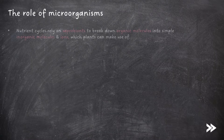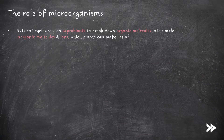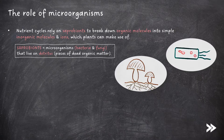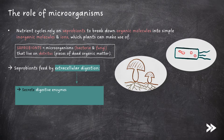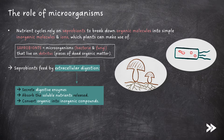Nutrient cycles rely on saprobionts to break down organic molecules into simple inorganic molecules and ions, which plants can make use of. Saprobionts are microorganisms, such as bacteria and fungi, that live on detritus. They feed by extracellular digestion. First, the saprobionts secrete digestive enzymes, then they absorb the soluble nutrients released. Overall, they convert organic into inorganic compounds.